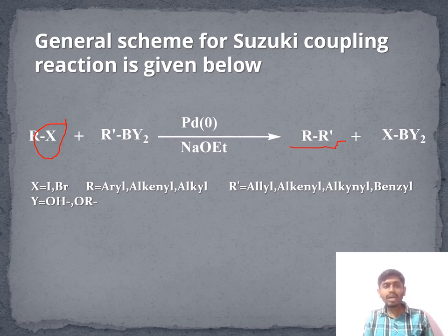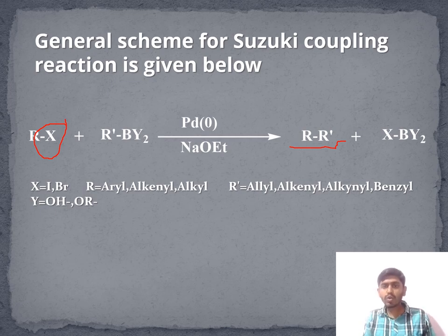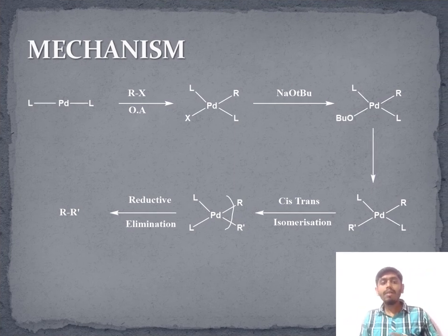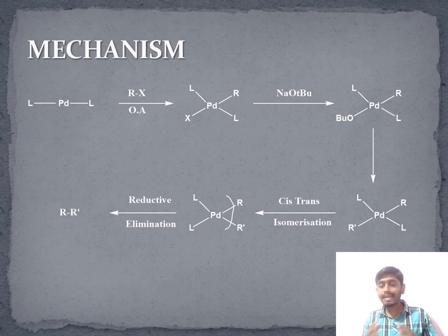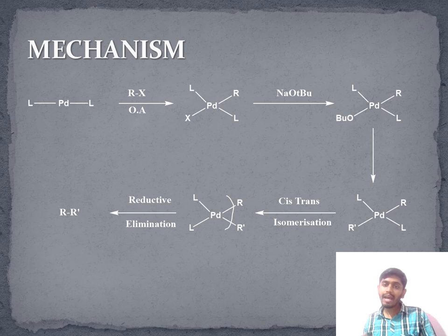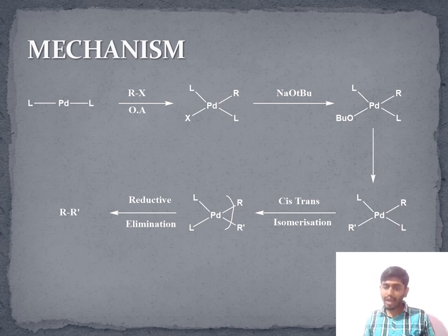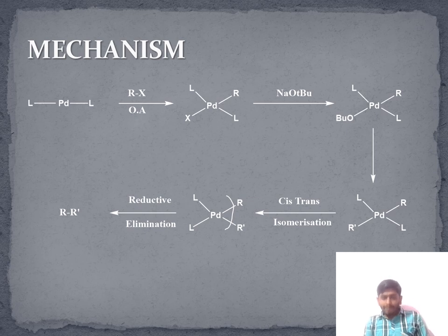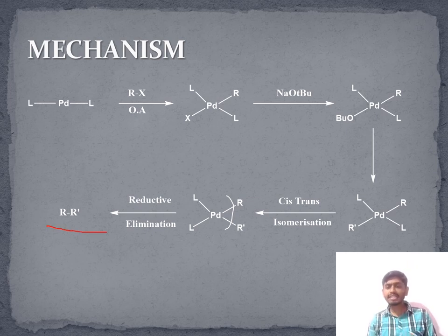Now let's discuss the mechanism for the Suzuki coupling reaction. In the first step, palladium L2 is attached to RX — this first step is oxidative addition. R and X are attached to palladium in a trans manner. Then X is replaced by NaX and O-tert-butyl is attached to palladium. In the next step, R' of the organoboron is attached to palladium. Further, cis-trans isomerization takes place, and finally after cis-trans isomerization there is a reductive elimination, giving coupling of R and R' at the final stage, forming a carbon-carbon bond.